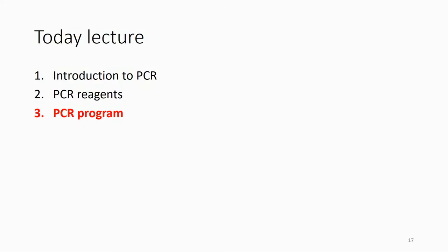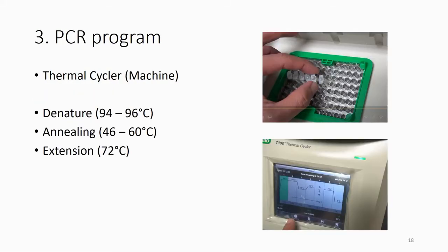The PCR program sets the PCR process as a program in the machine. We're going to use a machine called the thermal cycler, which can control the temperature for a certain period and then change to another temperature and control for another period.